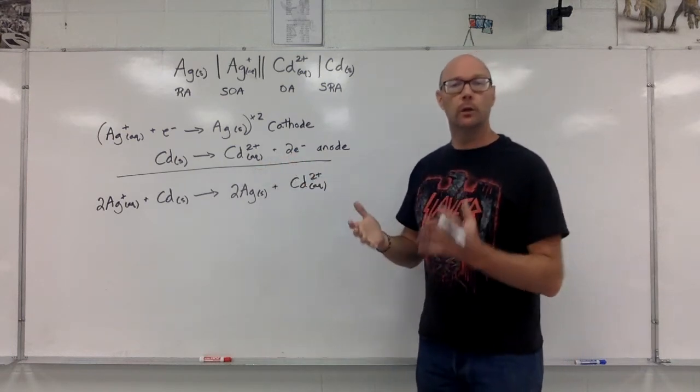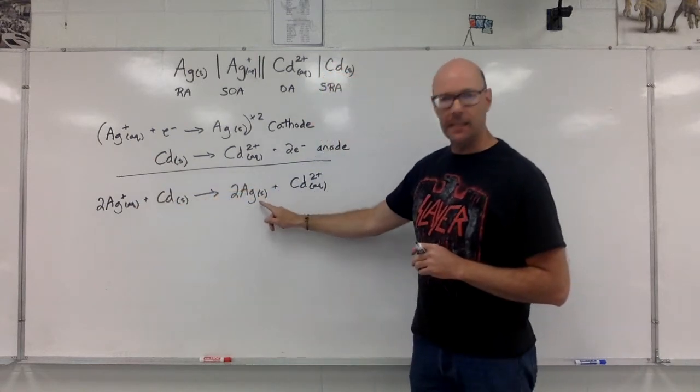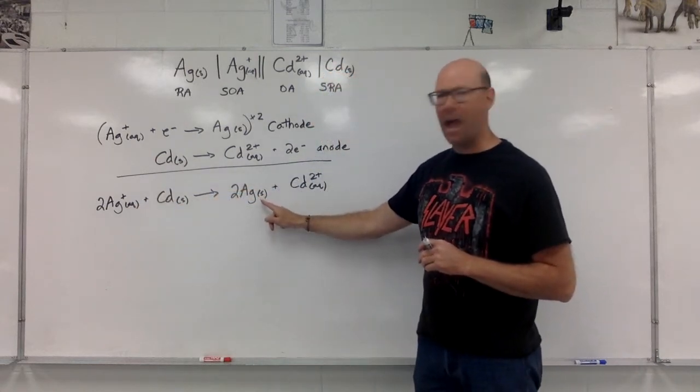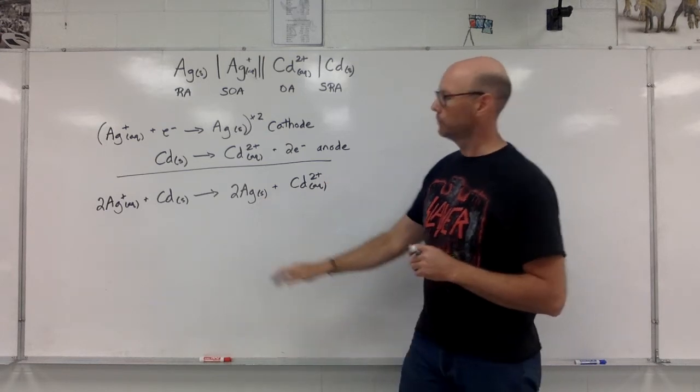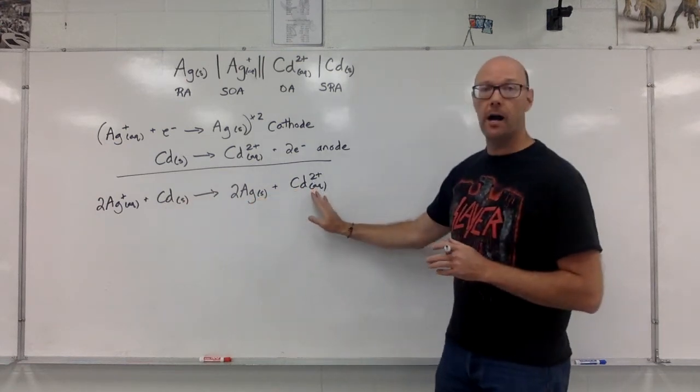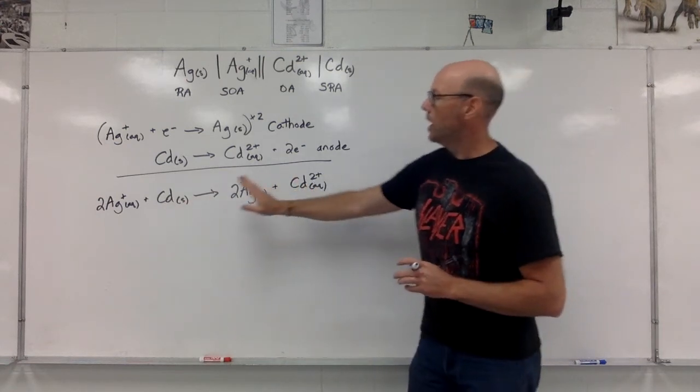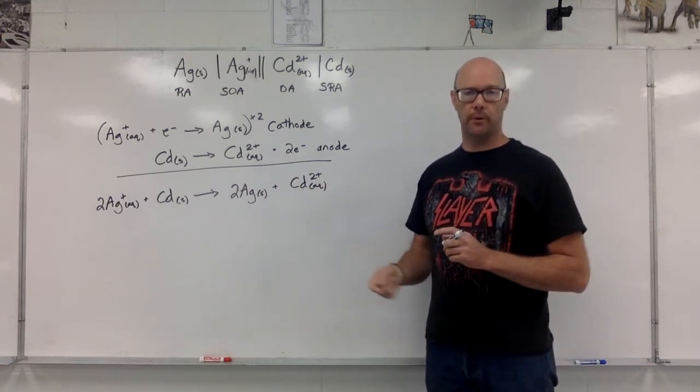If we look really closely, we can see that we're going to be consuming silver ions and making more silver solid. The mass of the silver electrode is going to increase as time goes by. The cadmium solid, we're converting into cadmium ions. The mass of the cadmium anode is going to go down as the cell operates.